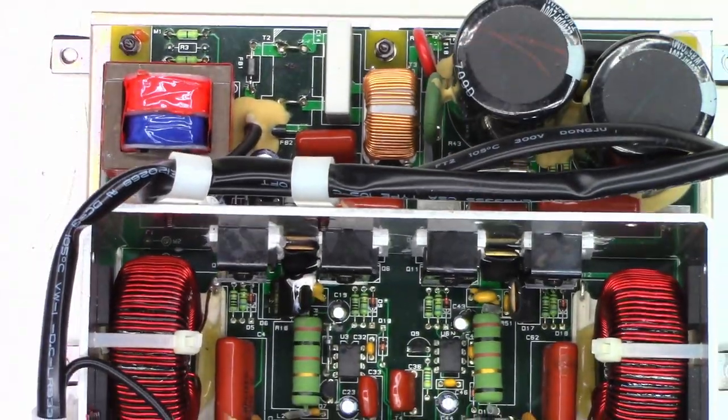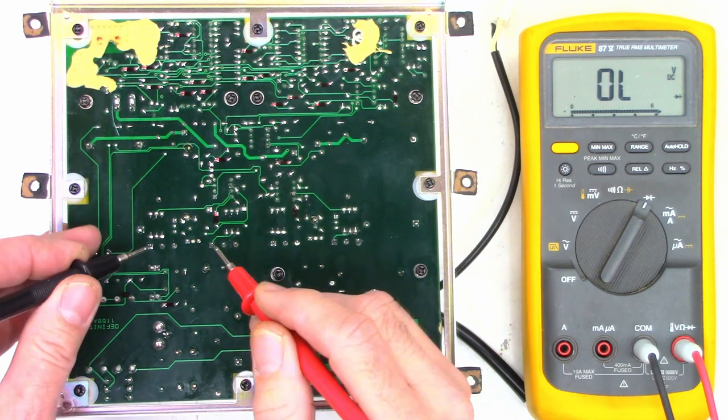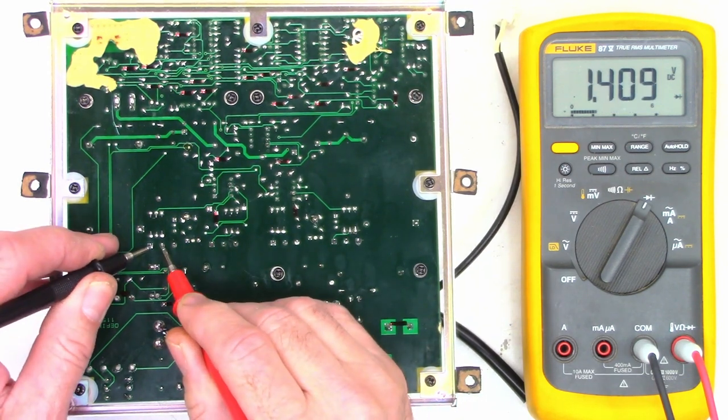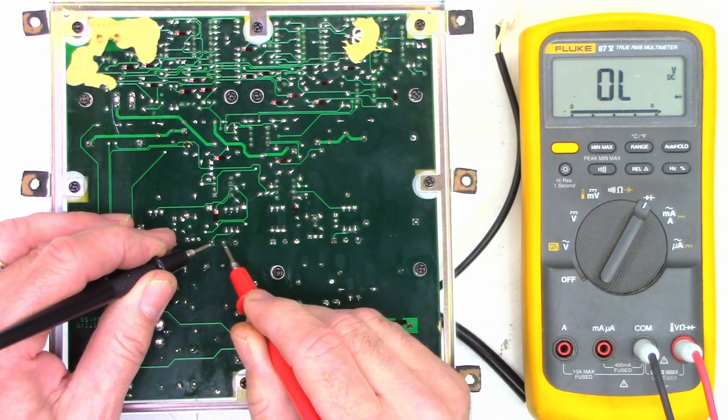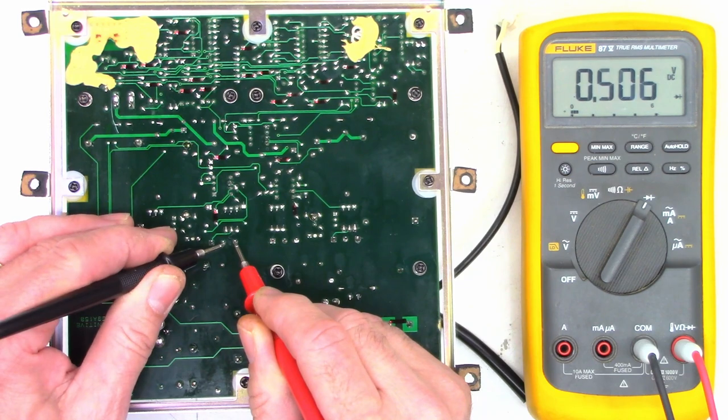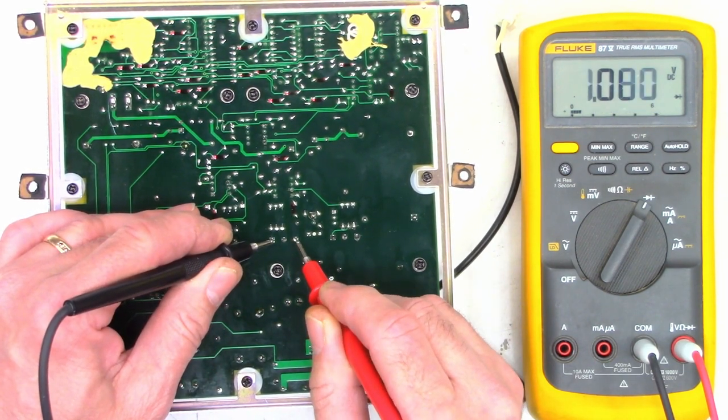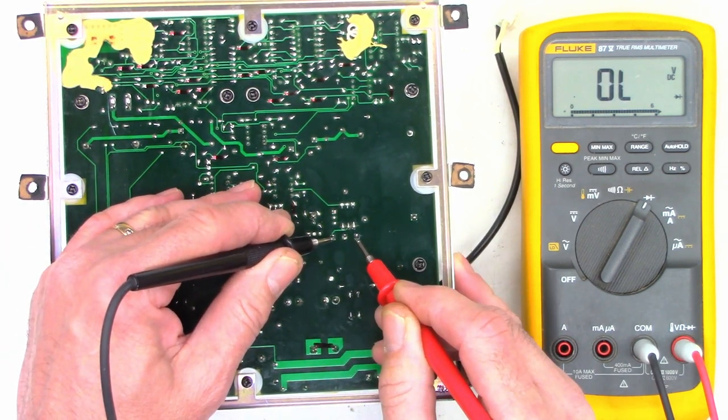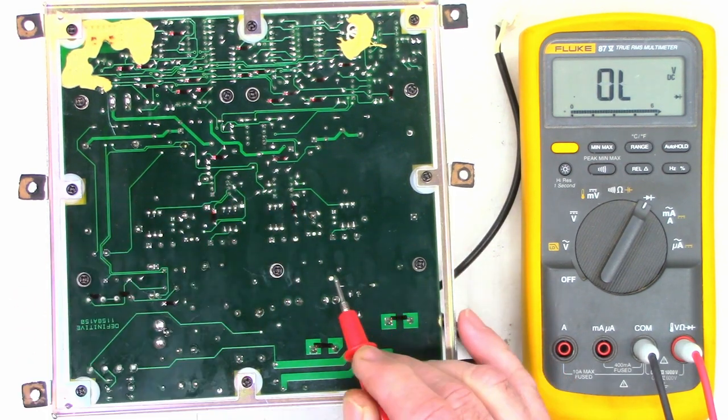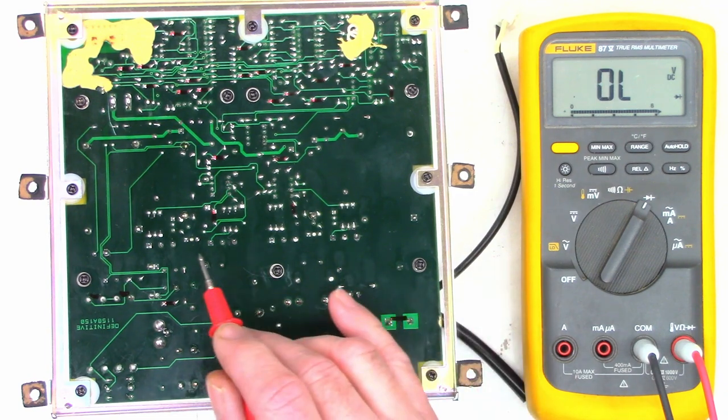First, just in the diode range I want to go ahead and check these FETs only for shorts. I'm not going to check anything else, just for shorts at this point. No short. No short. No short. I'm checking gate to source, gate to drain, and then source to drain on these FETs.